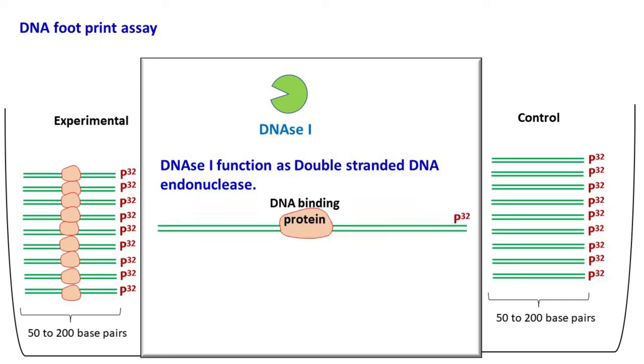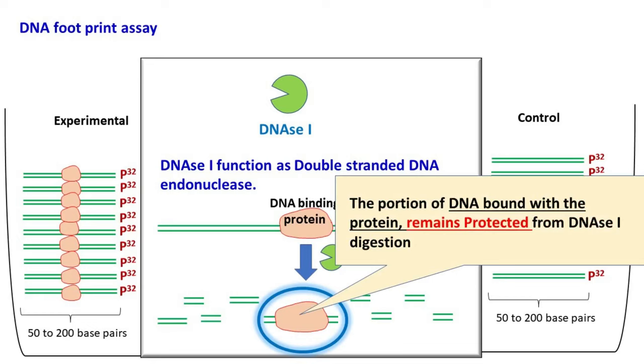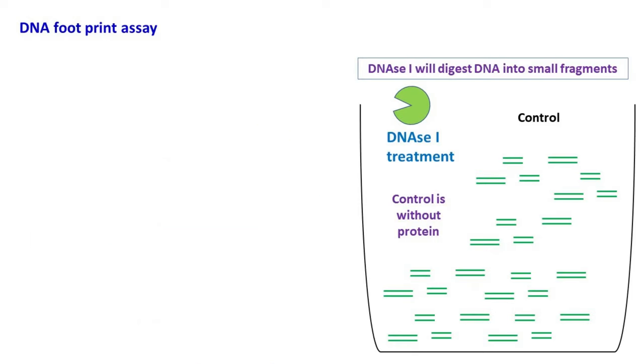However, the portion of DNA that is bound with the protein remains protected from DNase I digestion. Now in the control system where the protein is not added, the DNase I will digest the whole DNA fragment into small pieces of DNA.